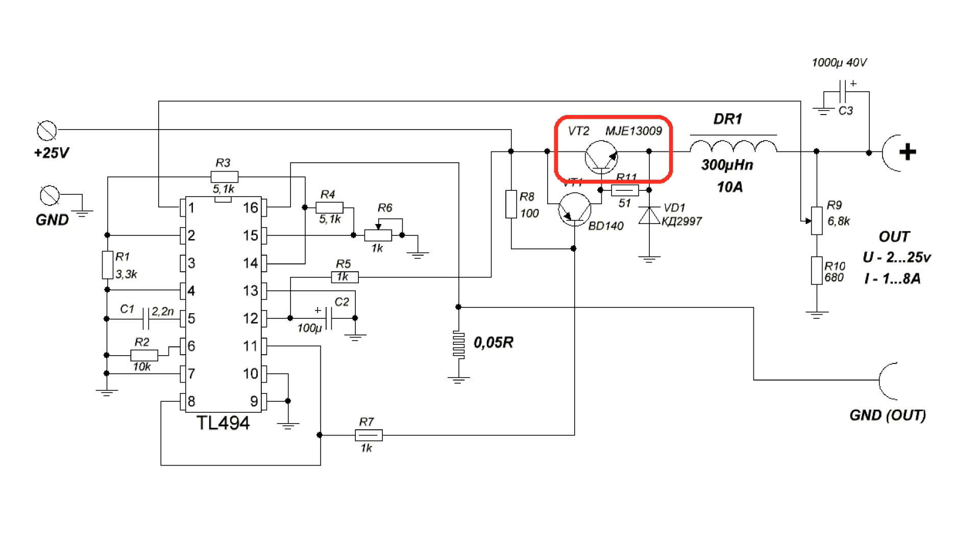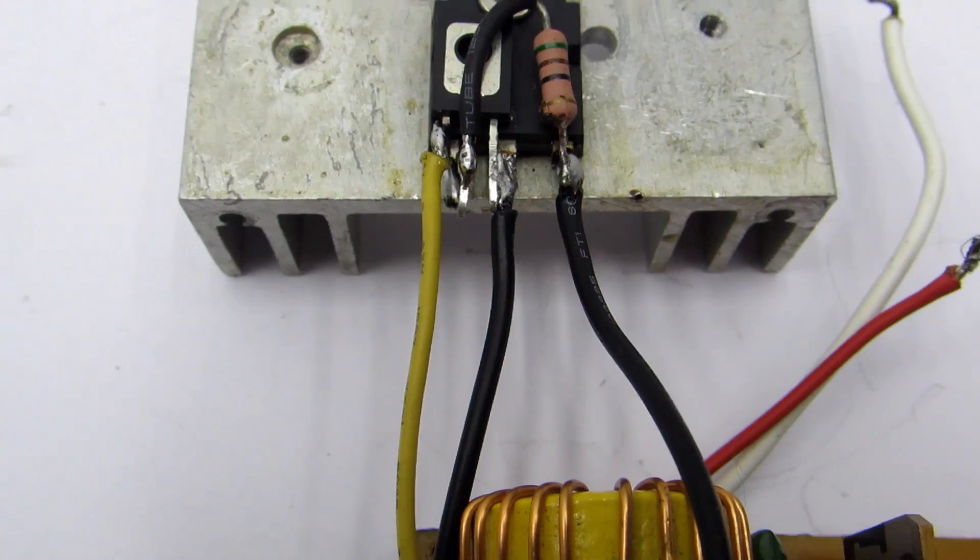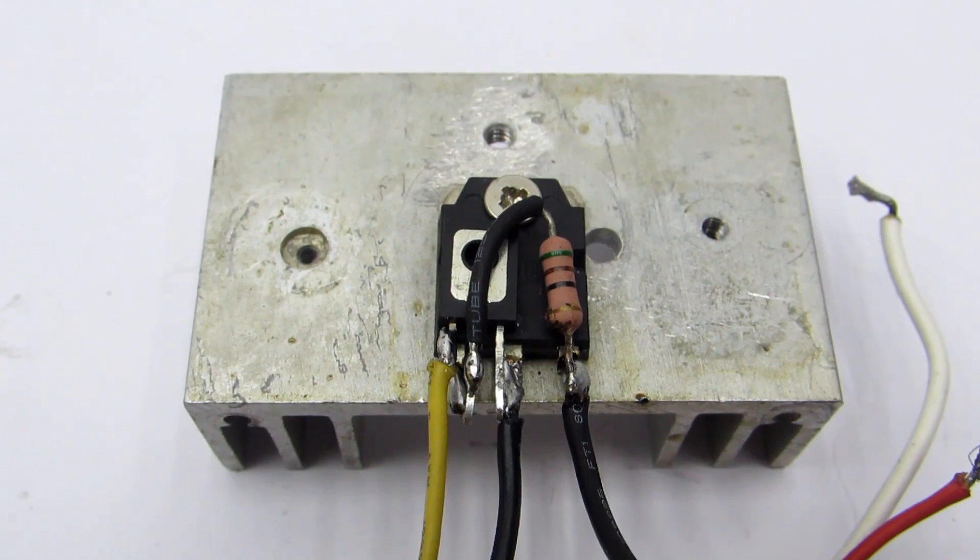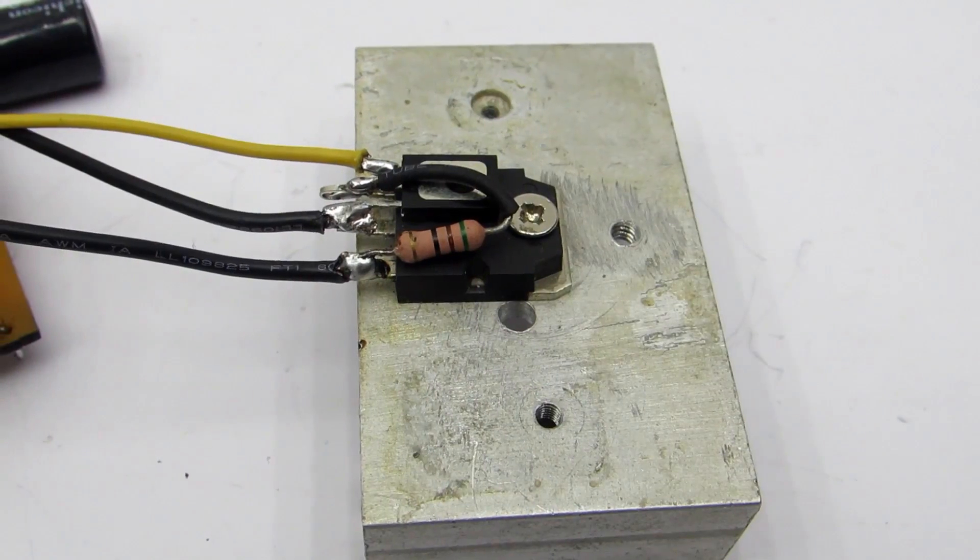The transistor operating in switching mode, being controlled by a PWM signal, this reduces the heating. The main transistor is controlled by a low-power transistor. A switch provides a large current gain and unloads the PWM chip. This is essentially an analog of composite transistor.